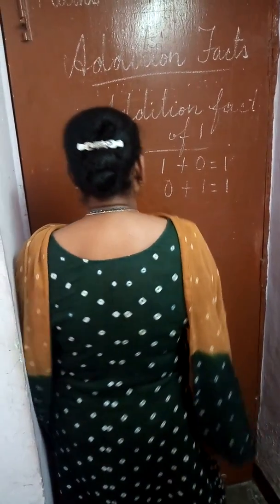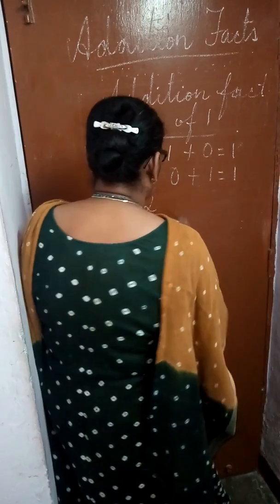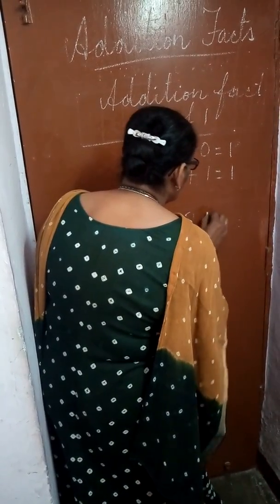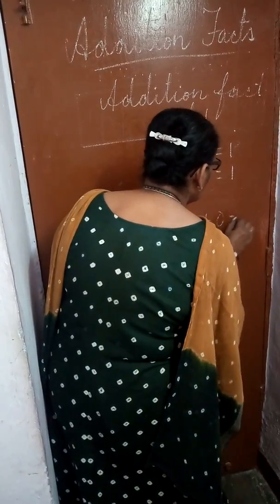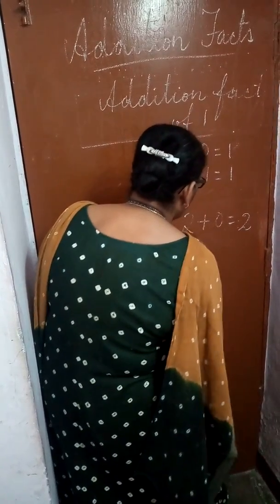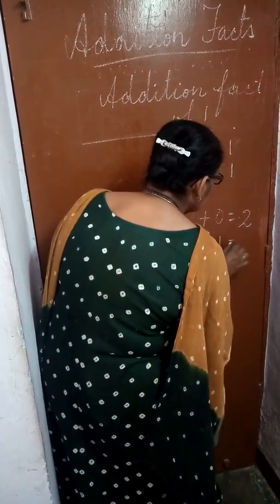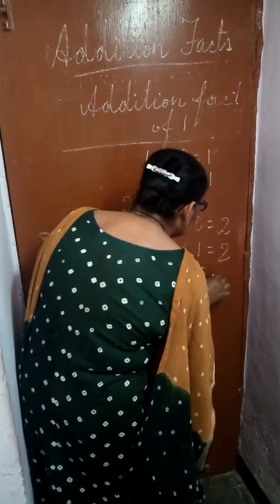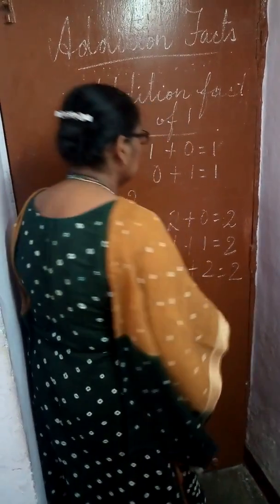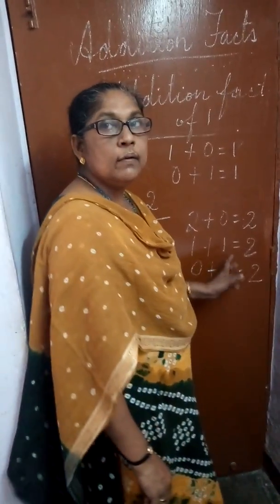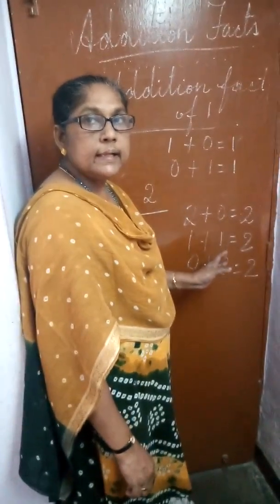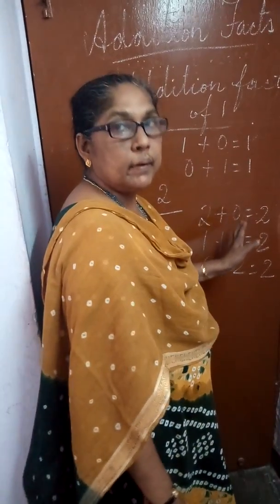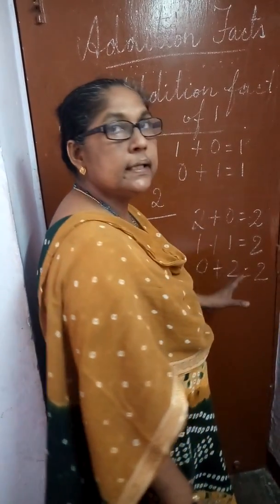Next, addition fact of 2: 2 plus 0 is equal to 2, 1 plus 1 is equal to 2, then 0 plus 2 is equal to 2. This is called addition fact. Like this, we can do addition fact for any number — 1, 2, 3, till 10.